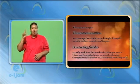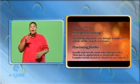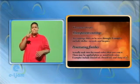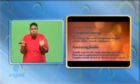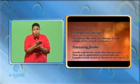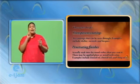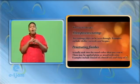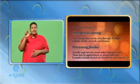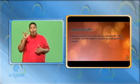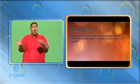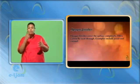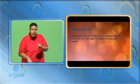Penetrating finishes actually soak into the wood rather than just coat it. These may be applied plain or mixed with color. Examples include linseed oil, Danish oil, and tung oil. Opaque finishes cover the surface completely. These cannot be seen through. Examples include paint and enamel.